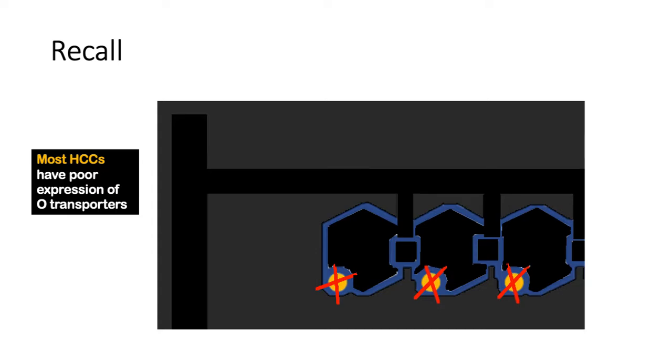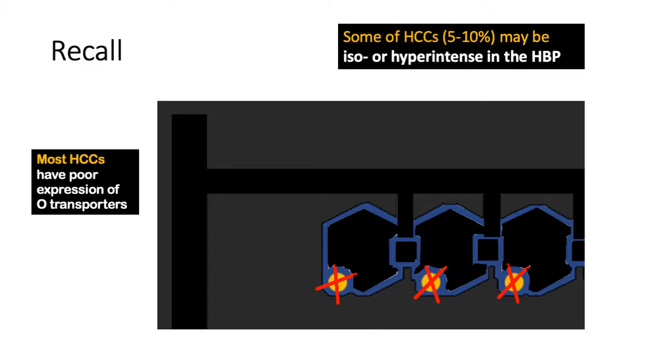If you recall, most HCC have poor expression of transporter O. However, some HCCs, about 10% of them, have iso or hyper-intense appearance in the hepatobiliary phase.